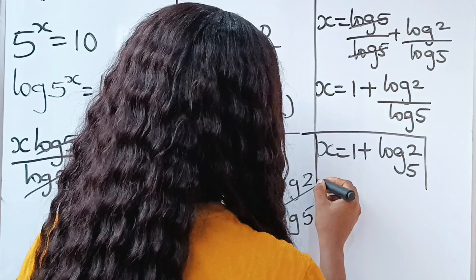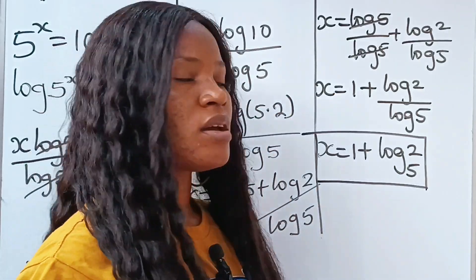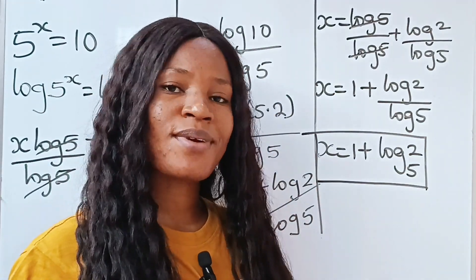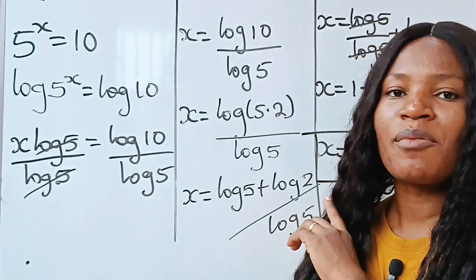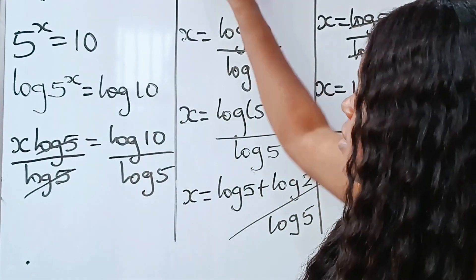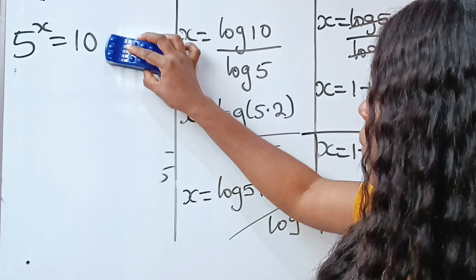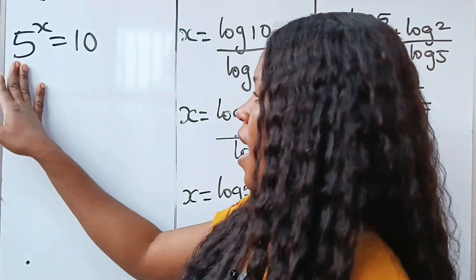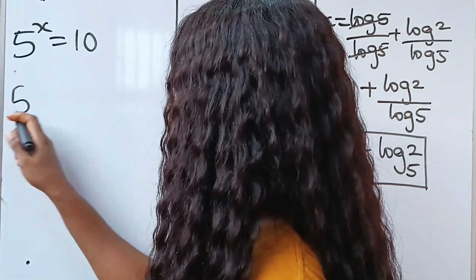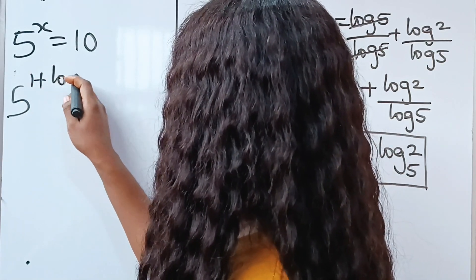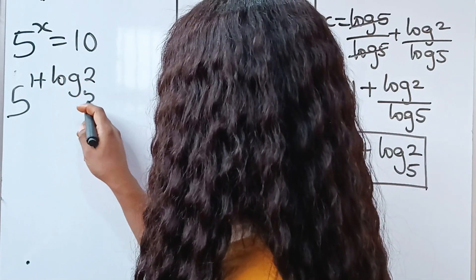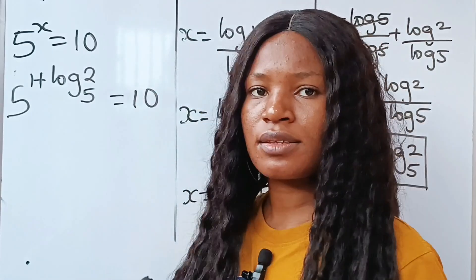Now, like I said, the essence of the video is to prove that what we got is right. Let's substitute this into the equation and prove that our solution is correct. So we have 5 to the power of 1 plus log 2 base 5 is equal to 10.